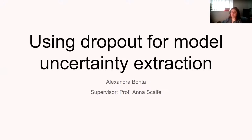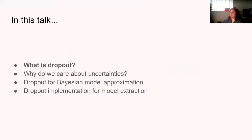My master's project was basically using dropouts for model uncertainty extraction on binary classification, and the dataset was an astronomical dataset. The focus was on how to get well-calibrated uncertainties when using neural networks. In this talk, I'm first going to go over: what is dropout, why should we care about uncertainties, dropout for Bayesian model approximation, and how to implement it.